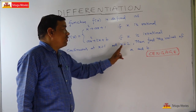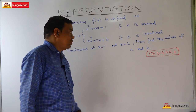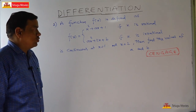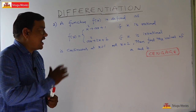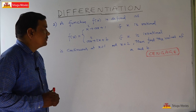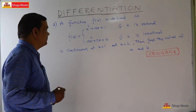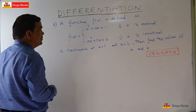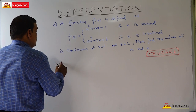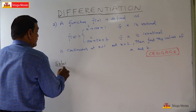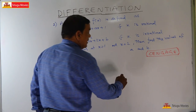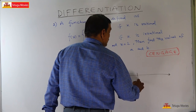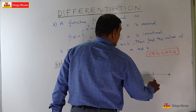The function is said to be continuous at x=1 and x=2. We need to find the values of a and b. Note that 1 and 2 are both rational numbers on the number line.